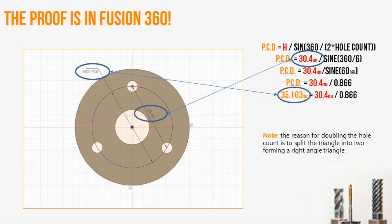I've created this part in Fusion 360, and what I did is I created a circle about 4.7 millimeters, and I took my H dimension, which was 30.4, and I did a pattern. Lo and behold, in Fusion 360, I came up with 30.4 based upon utilizing a PCD of 35.103. We've now proven that the math actually works.